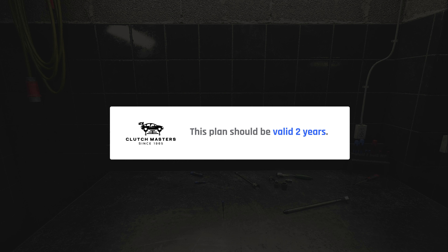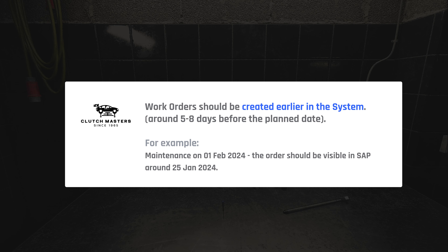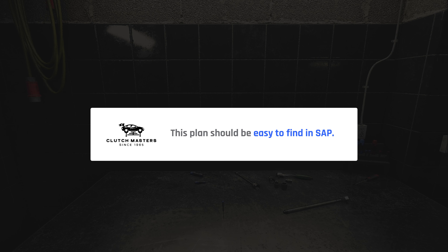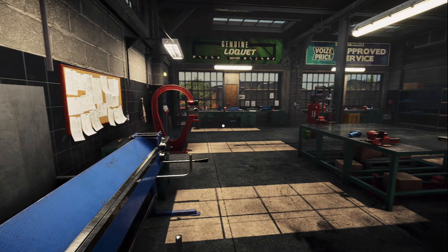Another requirement is to limit this plan to a specific deadline — it should be valid for only two years. The work orders should be available in the system about five days earlier than the planned date. That means as a supervisor I can launch the Fiori launchpad at the end of January and already see a work order with a planned date of 1st of February. This gives better visibility over work orders for this facility. Additionally, this maintenance plan should be easy to find in the system.